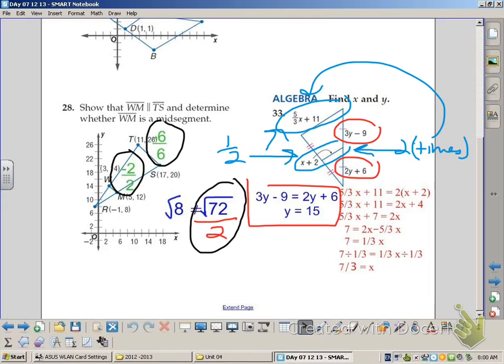In problem 33, since we have a mid-segment, we know that the other side is 2 times the mid-segment, and that is why we write the equation 5 thirds x plus 11 equals 2x plus 2.